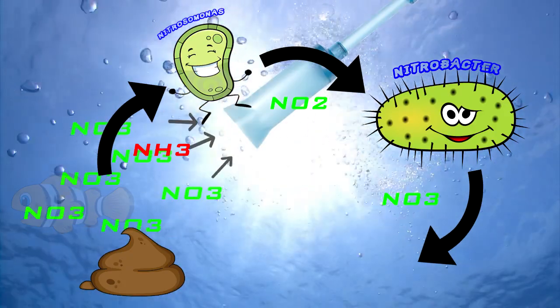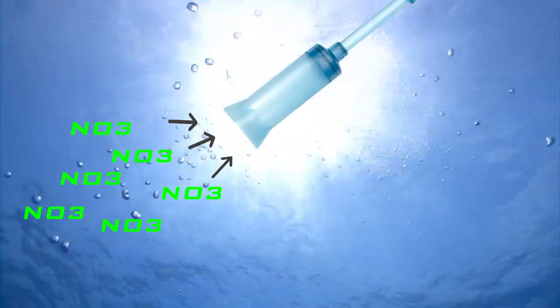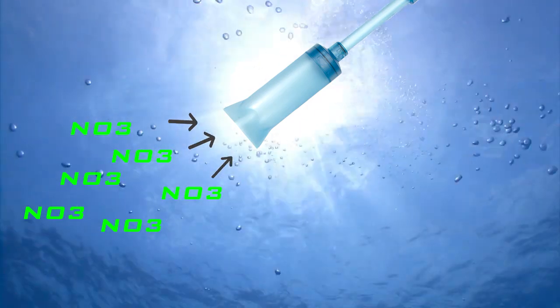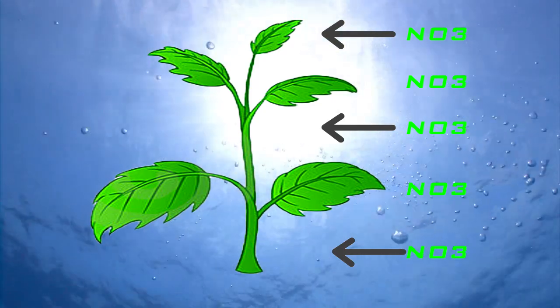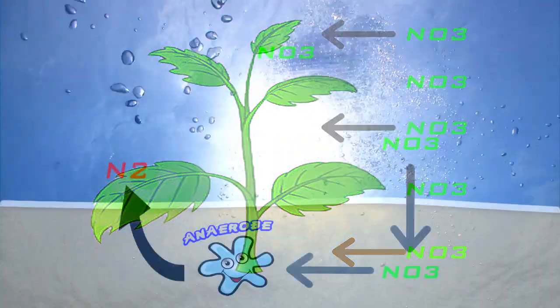Now there's a few ways of doing this. You can remove nitrate from your tank by performing frequent water changes. If you've got a planted tank or a large planted refugium, plants also consume nitrates.